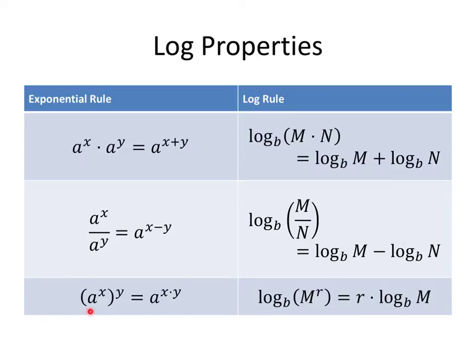Finally, when we have a power raised to a power, we multiply those exponents together, and so when we have the logarithm of a power, we multiply the power times the logarithm of the base. All of these log rules come from the fact that exponentiation and logarithms are inverse processes. That's why the rules might look a little strange for logarithms, but they all come from the principle that the logarithm and the exponent are inverses of each other.